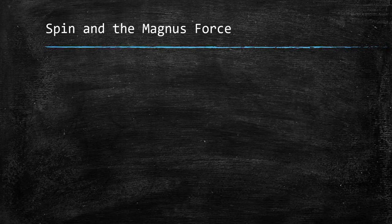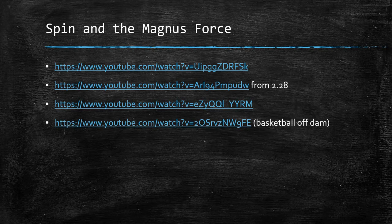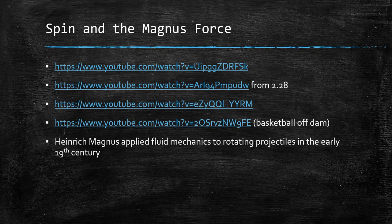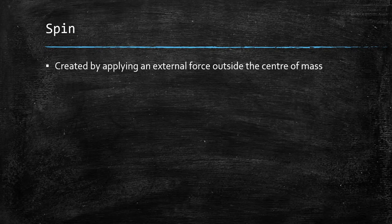There is a second principle you need to know: spin and the Magnus effect, or the Magnus force. There are YouTube videos you can watch — search 'Magnus effect basketball dam' to see the effect demonstrated. Heinrich Magnus, in the early 19th century, applied fluid mechanics to rotating projectiles — essentially applying Bernoulli's principle to projectiles that are spinning in the air. The Magnus effect is the creation of an additional Magnus force on a spinning projectile which deviates it from the expected flight path. In sport, this effect is used to mislead the opposition. Spin is created by applying an eccentric force outside the centre of mass.